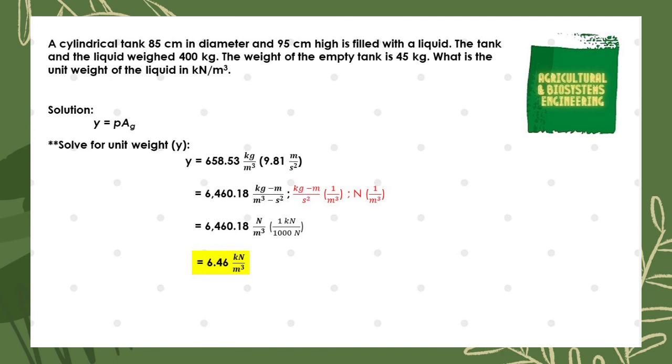So we now have 6460.18 newtons per cubic meter. Since what is required in the problem is unit weight in kilonewtons per cubic meter, we convert newtons to kilonewtons using the conversion factor. After converting, we now have a final answer of 6.46 kilonewtons per cubic meter.